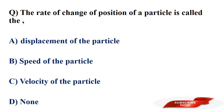The rate of change of position of a particle is called? Options: displacement of the particle, speed of the particle, velocity of the particle, none of those. Answer: option B, speed of the particle. The rate of change of position of a particle is called speed of the particle.